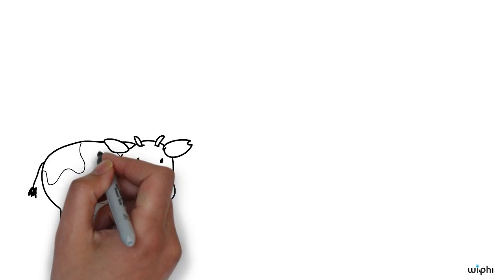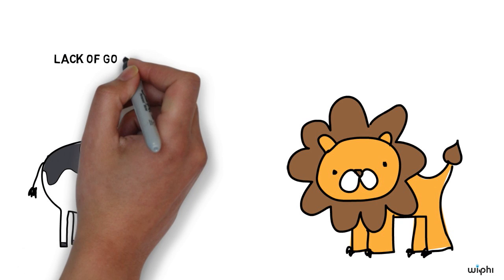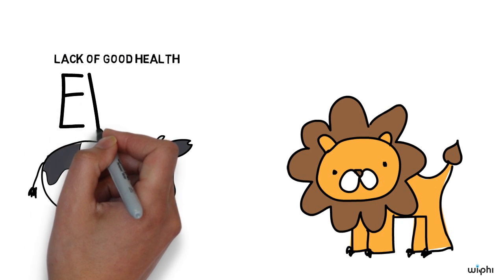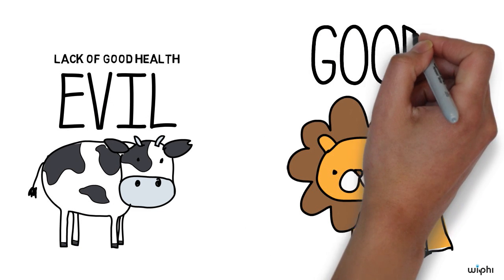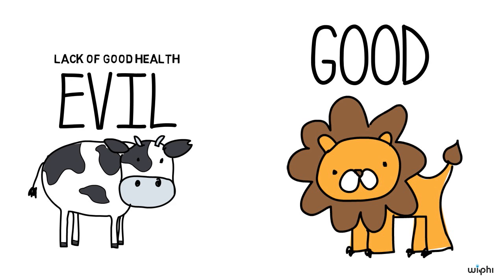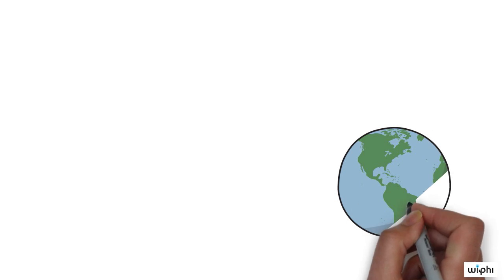Suppose an old and weakened wildebeest is caught and eaten by a lion in East Africa. The lack of good health is an evil in the wildebeest, but it serves the good of the lion, and beyond that, the good of the great panorama of animal life in East Africa. So a created thing that is defective when considered by itself can be part of a larger reality that is good.